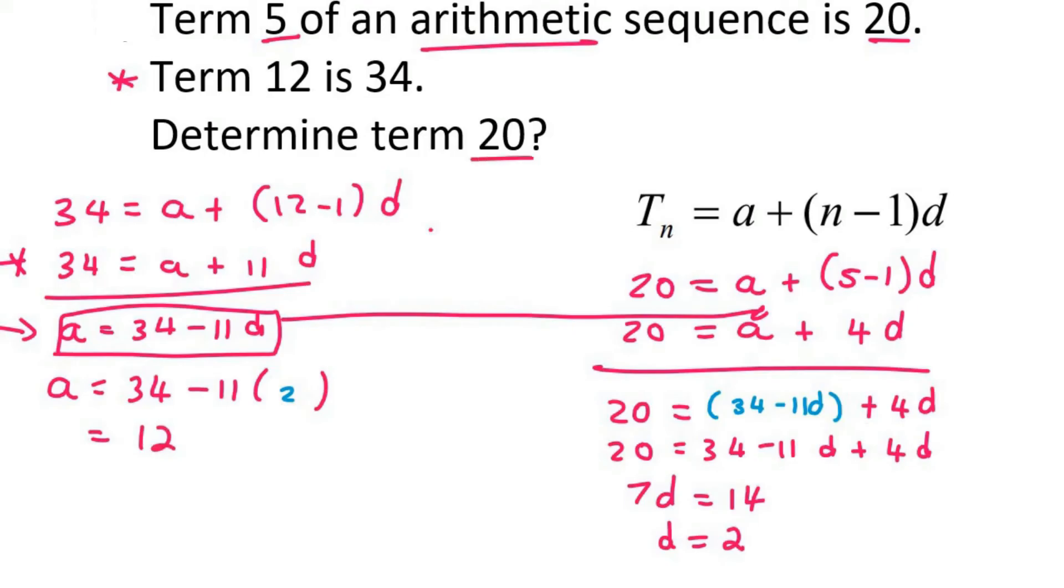Now they said find term 20. Now it's easy. We just use this formula where we say term 20 is a, which is 12, plus 20 minus 1 times d, which is 2. And so that will be 50.